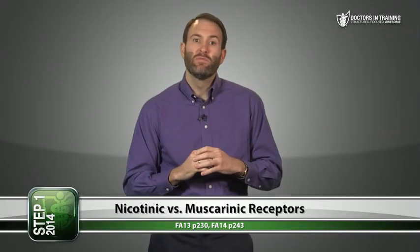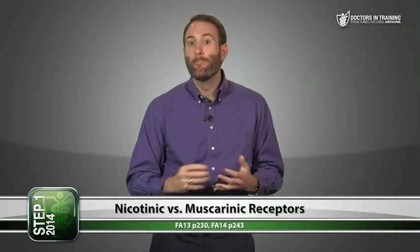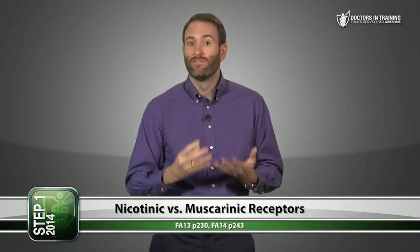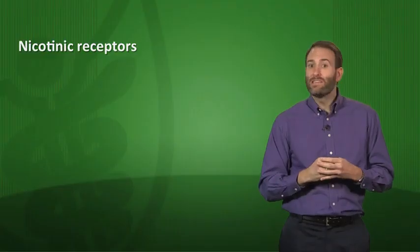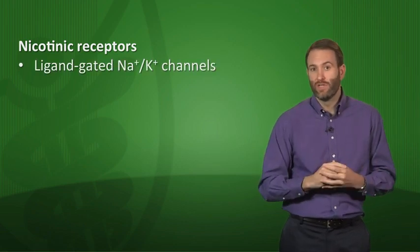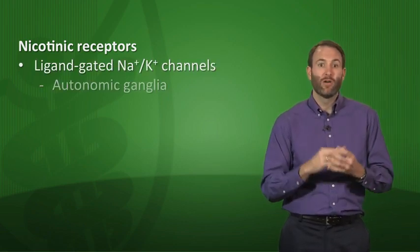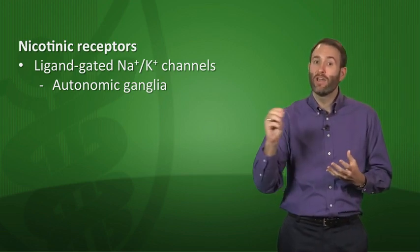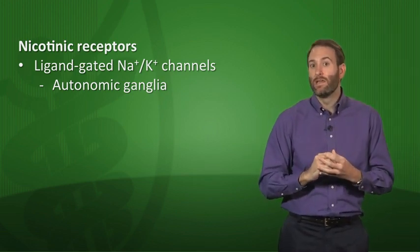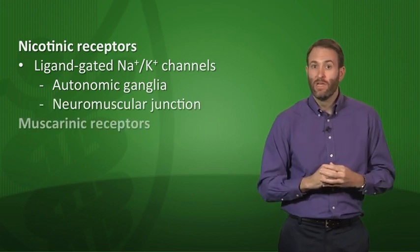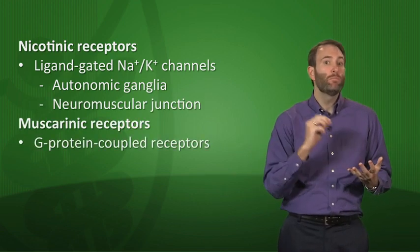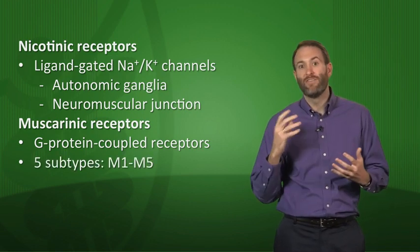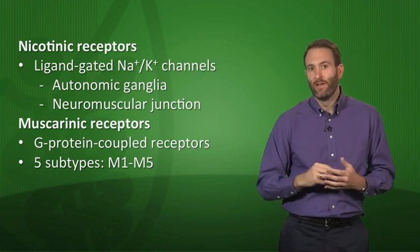Nicotinic receptors are ligand-gated sodium-potassium channels found on ganglia in the autonomic nervous system and also at the neuromuscular junction of the somatic nervous system. Muscarinic receptors are G protein-coupled receptors that act through second messengers. There are five subtypes, named M1 through M5.